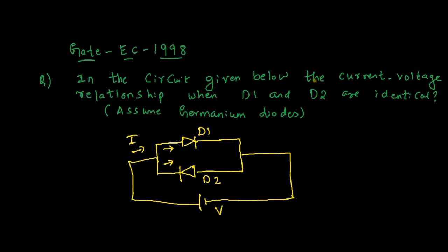So here is the question. In the circuit given below, the current-voltage relationship when D1 and D2 are identical — they are asking what is the current-voltage relationship. We need to derive an equation for I and V when D1 and D2 are identical.